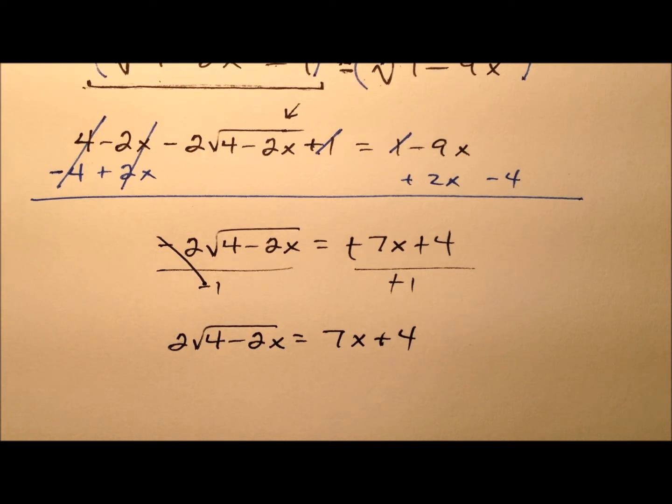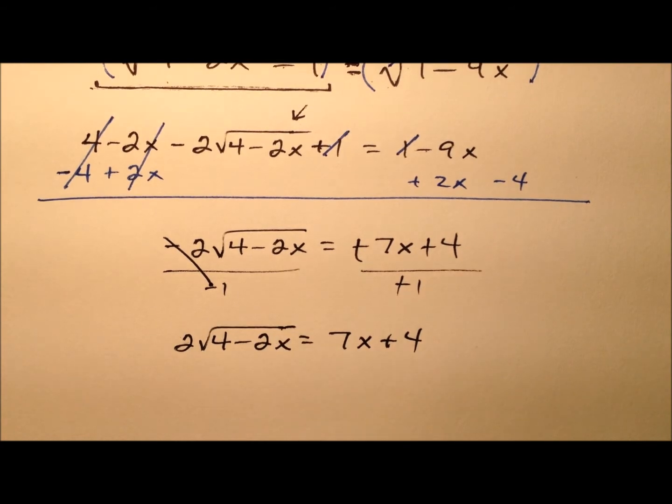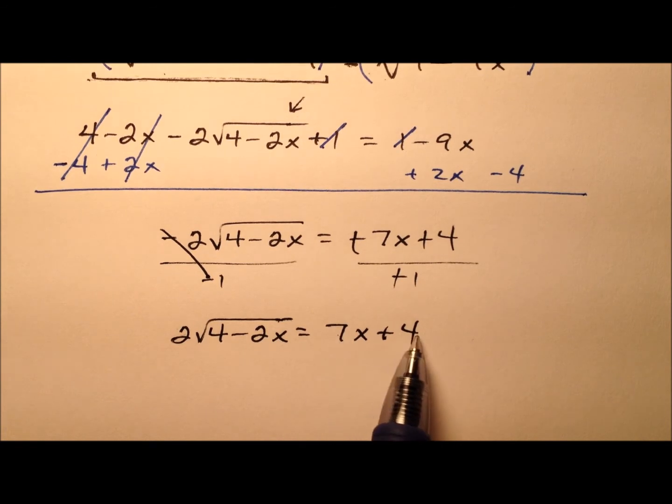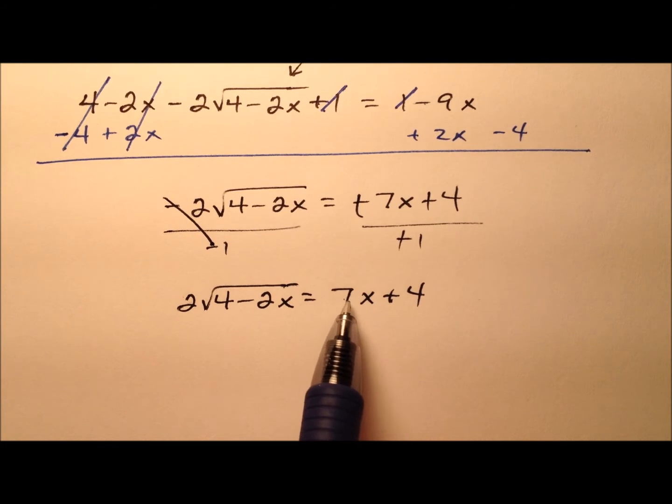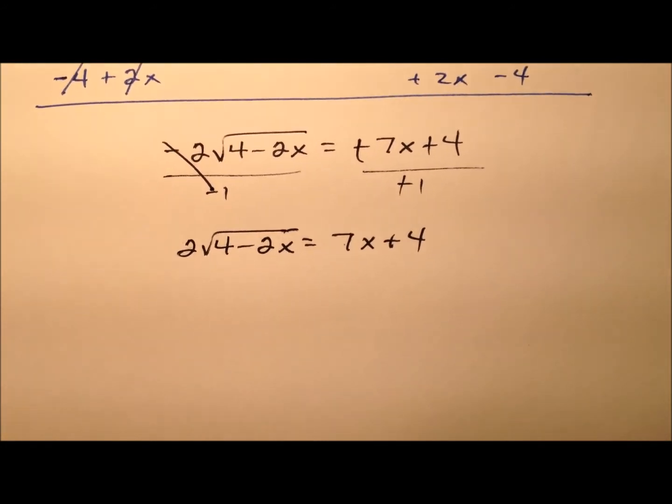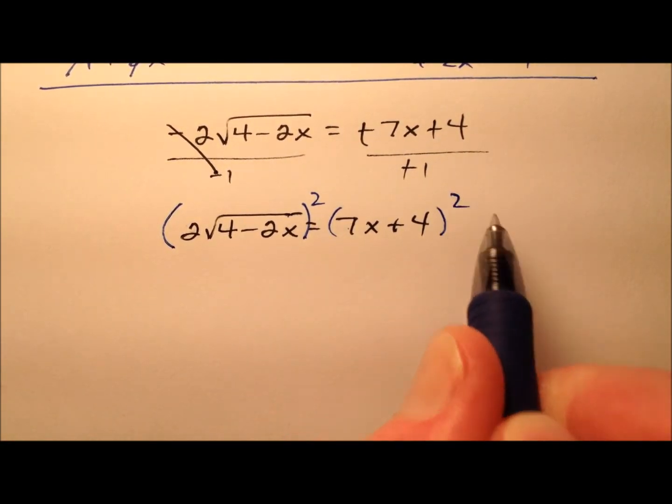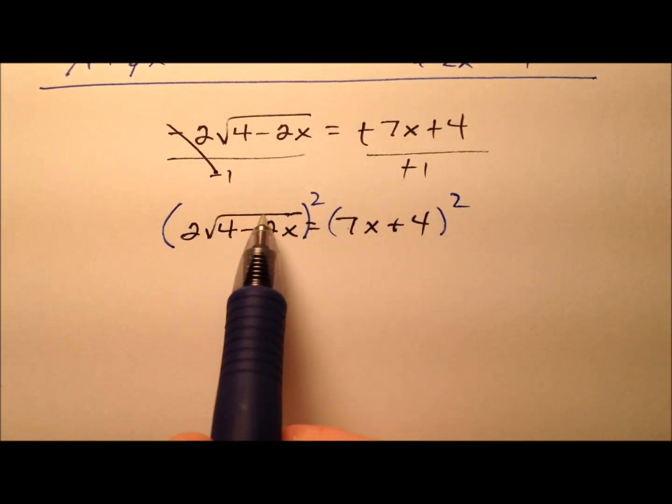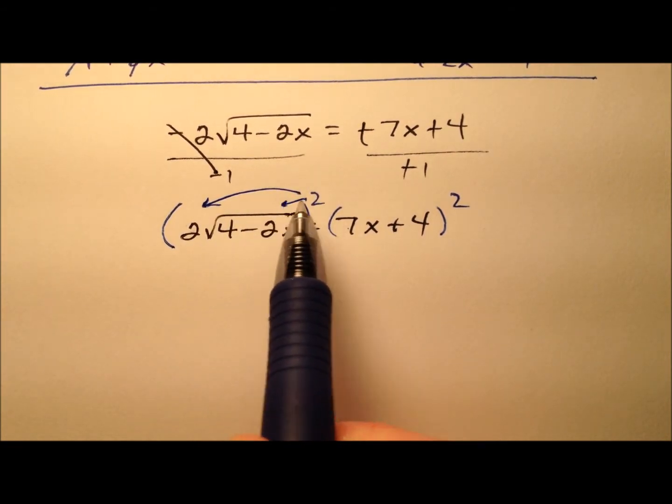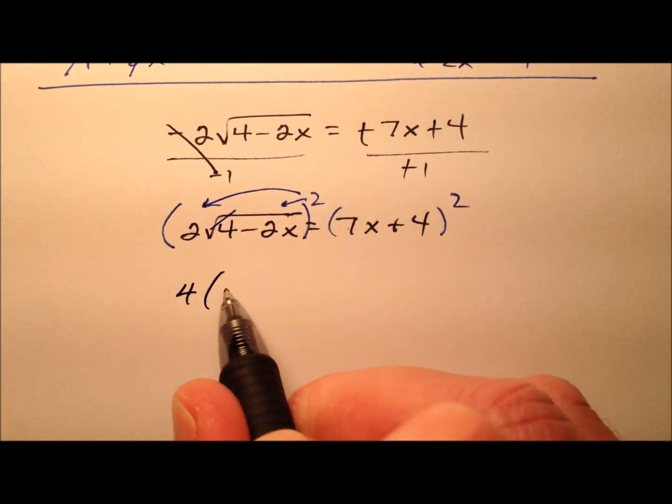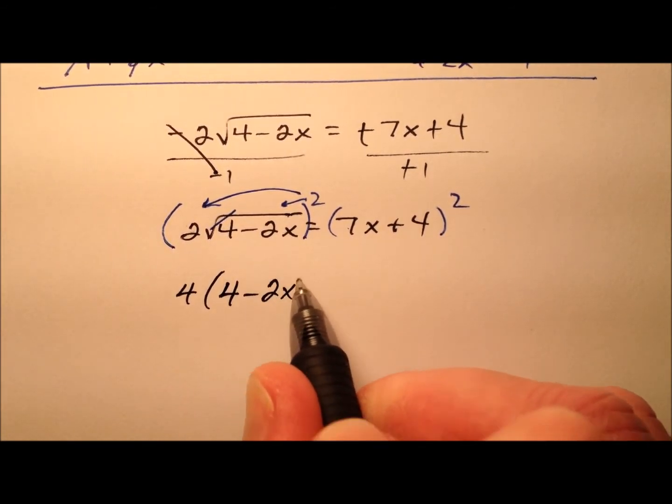Here's a consideration to make. We could really get this square root expression all by itself by dividing everything by 2. But since these numbers aren't both even, I'm not sure dividing by 2 is the best course of action because this would be 7 halves x plus 2, and we're going to have to square that. So maybe let's just square it the way it is right here. On this left side, we'll square the 2 and we'll square this square root expression. So we'll have 4 times 4 minus 2x.